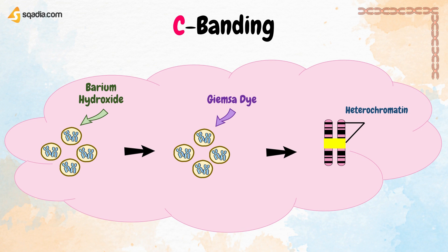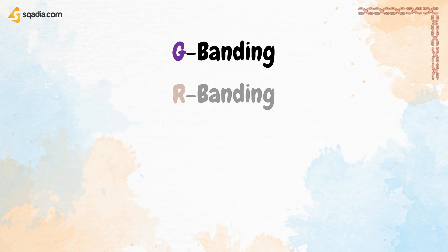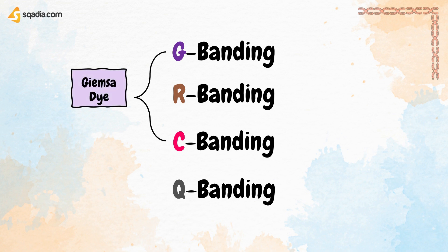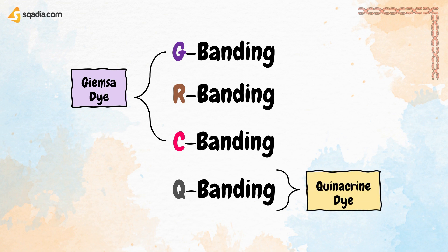The most important banding techniques include G-banding, R-banding, Q-banding, and C-banding. In the first three banding techniques — G, R, and C — we use Giemsa dye to stain the chromosomes, while in Q-banding we use quinacrine dye to stain the chromosomes.